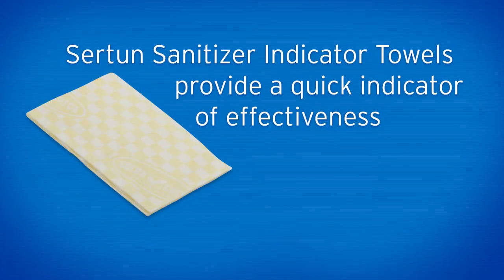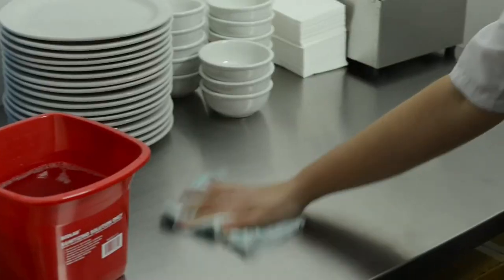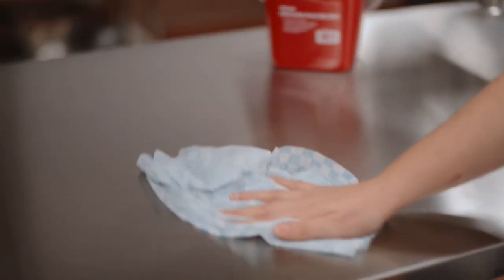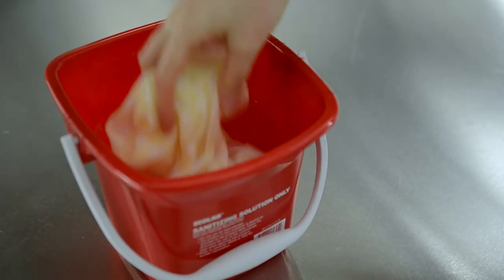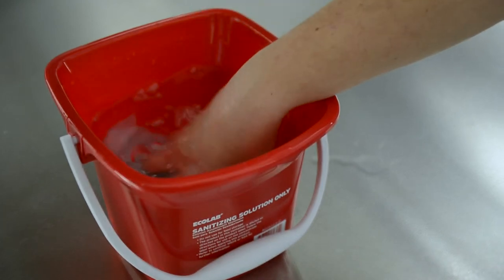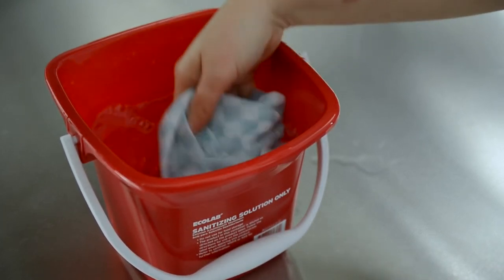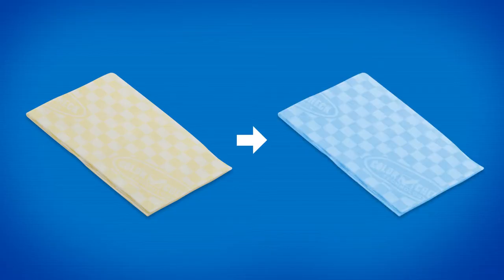Certain towels change color to indicate the presence of the proper concentration of Quatt sanitizer on the towel. Activating the yellow certain towel is as simple as submerging it into a bucket of Quatt sanitizer. The towel is charged when it turns blue.